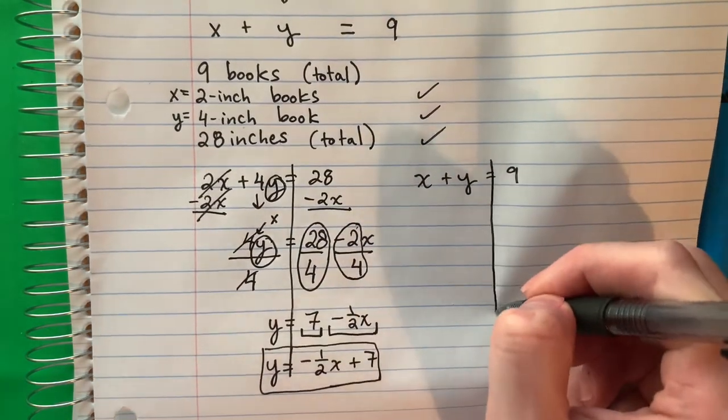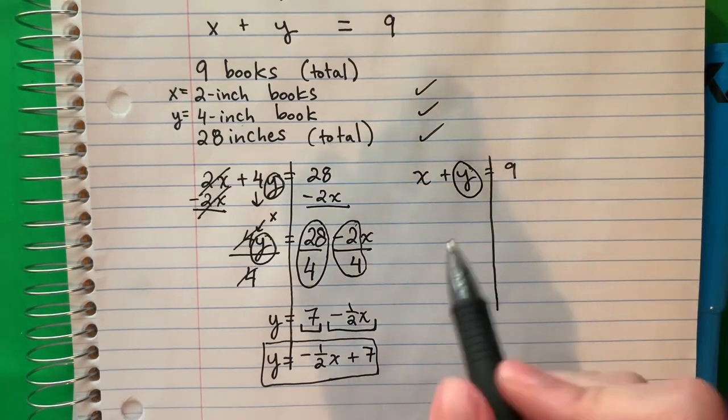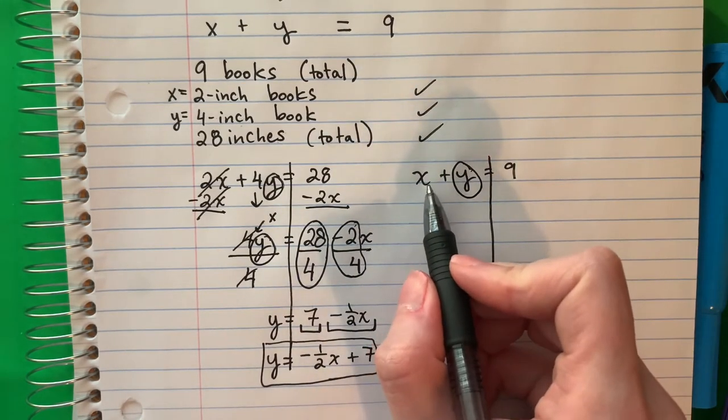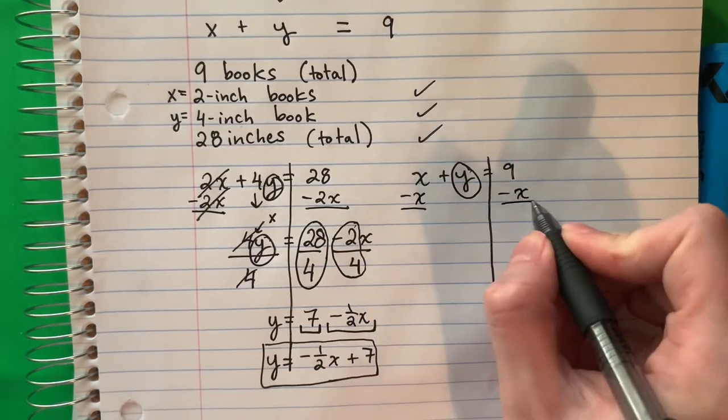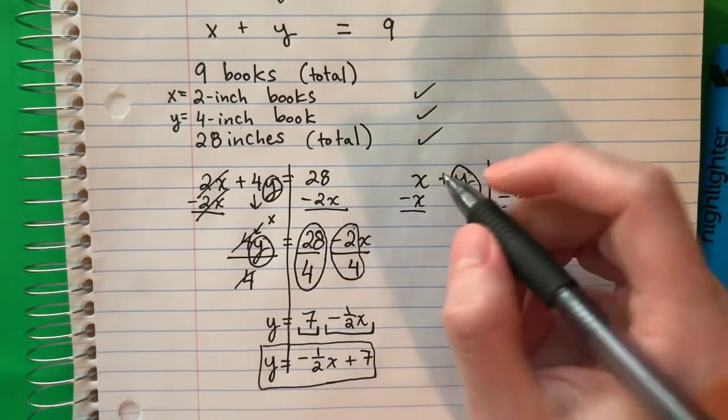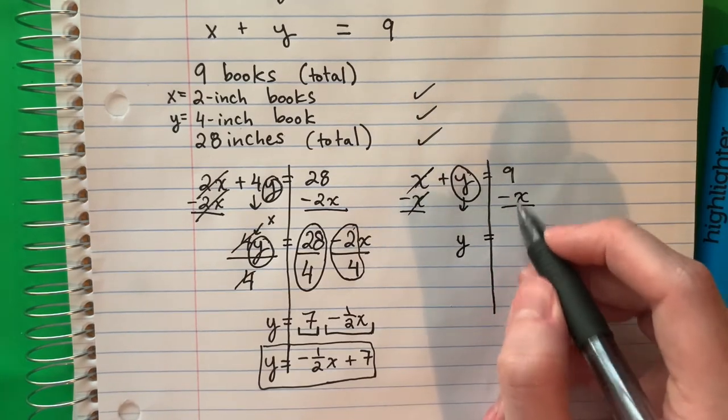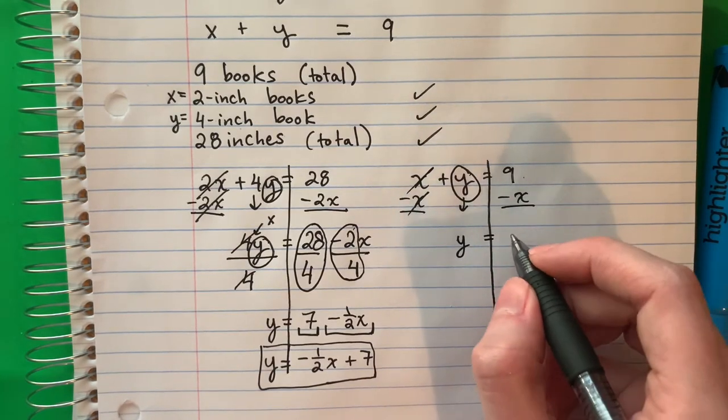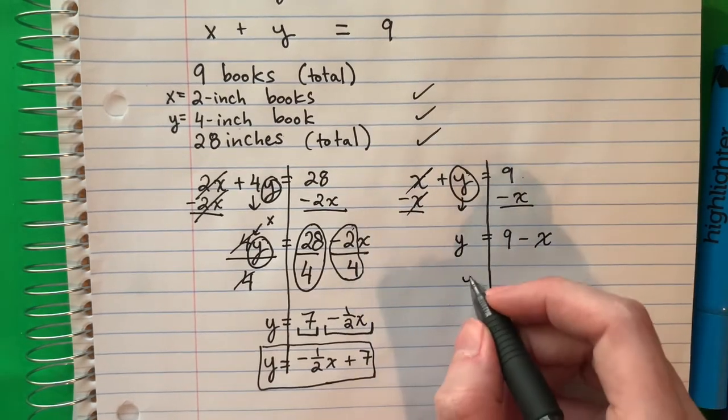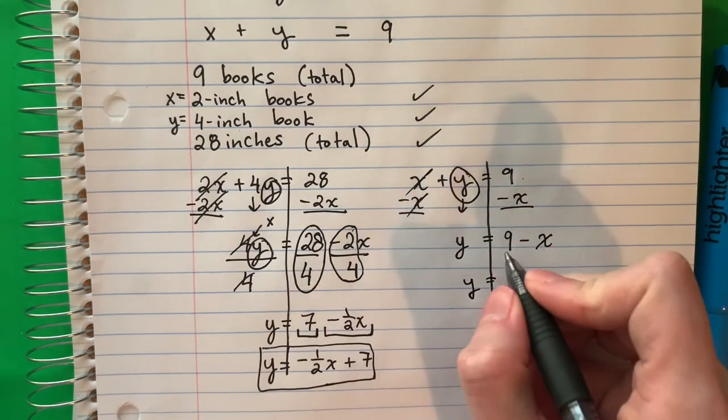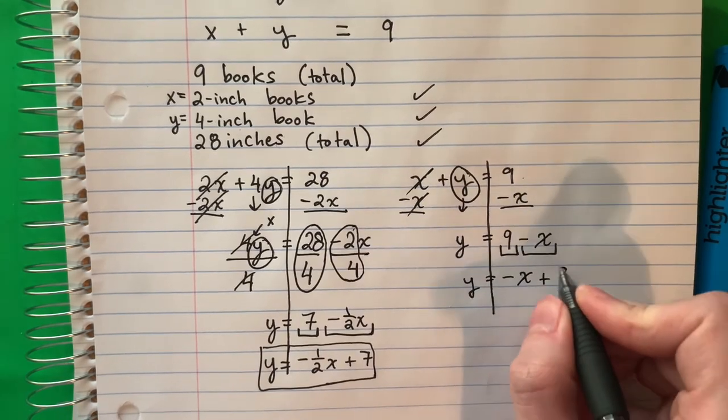Now this one. I want the y alone. Do I move y? No, the other one, which is x. This is positive, the opposite is negative, so negative x. X minus x is zero, cancel. Copy down y equals. We will copy this because there's no x, so 9 - x. The y is alone, but I need to switch. So y = -x + 9.